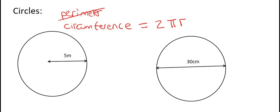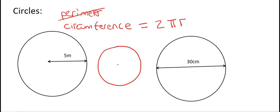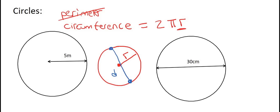Now some students get a little bit confused about what radius is. The radius is this distance here. If you have a circle and you have the middle of your circle, the distance from the middle to the outside — we call that the radius. If it goes from one side of the circle through the middle all the way to the other side, that is called the diameter. But what we want to use in our formula is the radius.